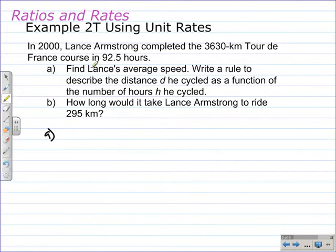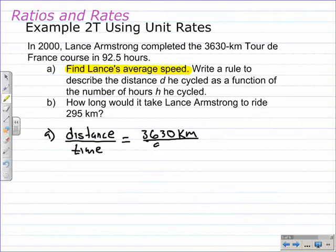The first thing we need to do is find his average speed. To calculate average speed, you take the distance and divide it by the time. It's a variation of the distance formula. Distance divided by time, so we take 3630 kilometers and divide that by his time, 92.5 hours. That's going to give us his average speed, his kilometers per hour. To do this, we need to divide 3630 by 92.5. Technically, to reduce the fraction to a unit rate, we divide both by 92.5.